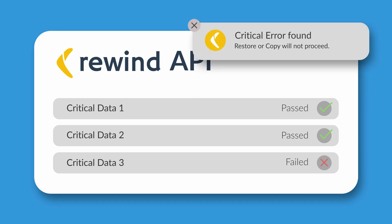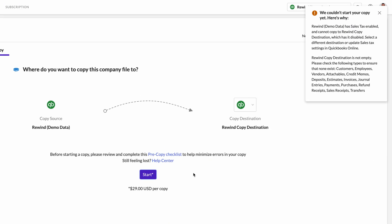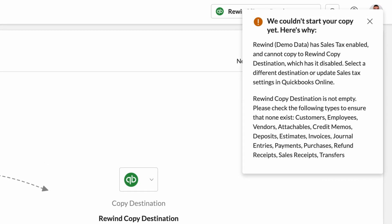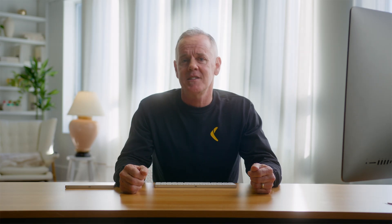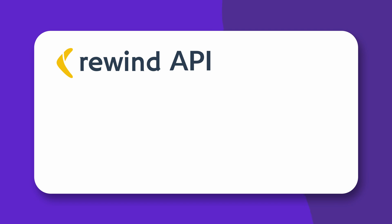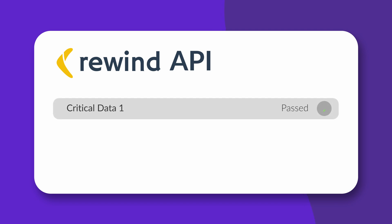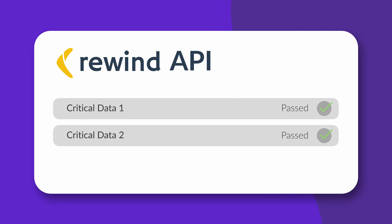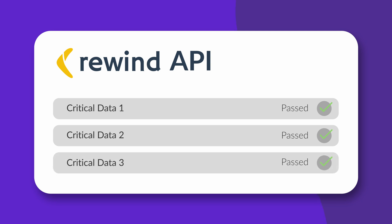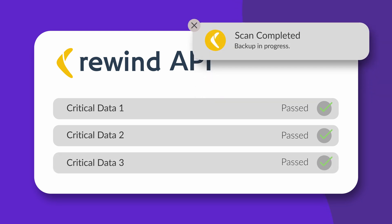If a critical error is found, the restore or copy won't proceed, and you'll see an error message. In most cases, the initial check passes and the data transfer proceeds. From there, any errors that may happen are documented and sent to the customer email attached to the Rewind account, in the post-restore or post-copy summary email.